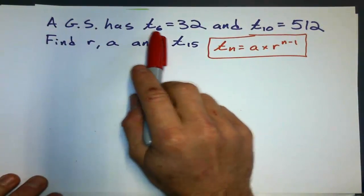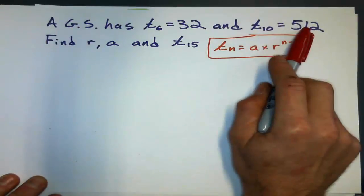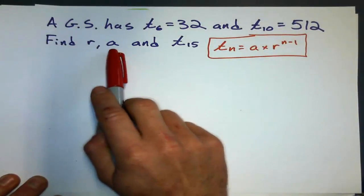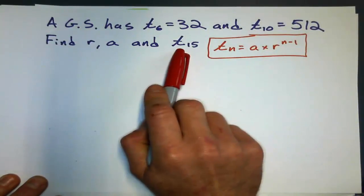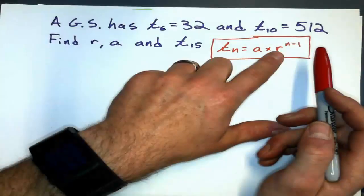A geometric sequence has a 6th term of 32 and a 10th term of 512. Find the ratio, the first term, and the 15th term.